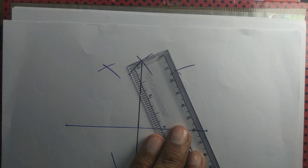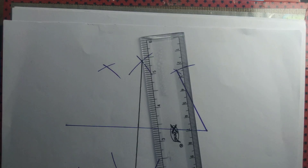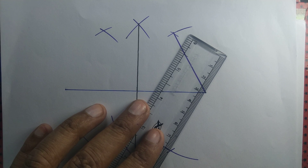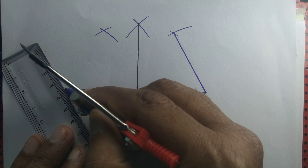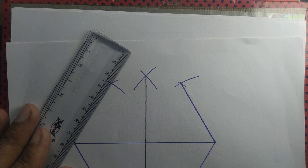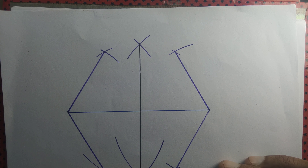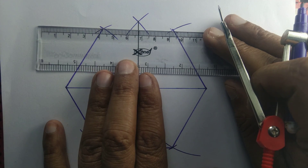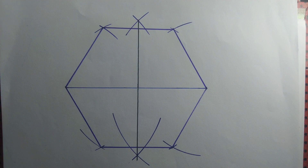Let us join those intersection points with one end of the line segment, and again with the other end of the line segment. We join the other end with the other two intersection points. Lastly, we join the intersection points of the arcs. What we get is a regular hexagon with its diagonal equal to 10 centimeters.